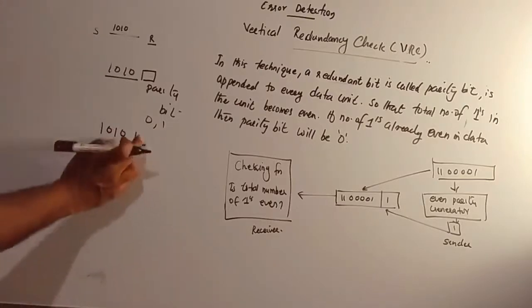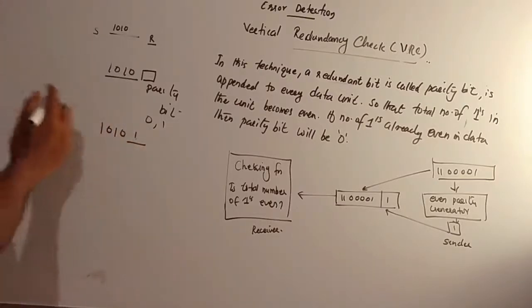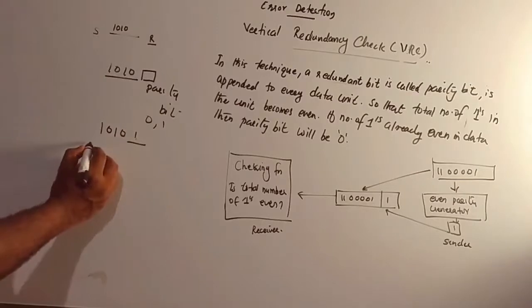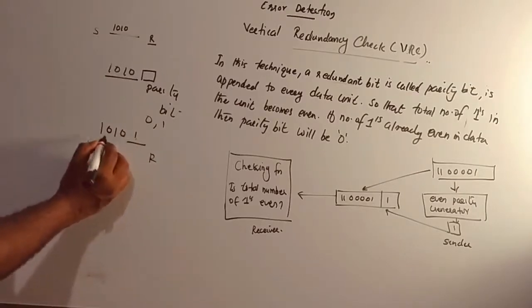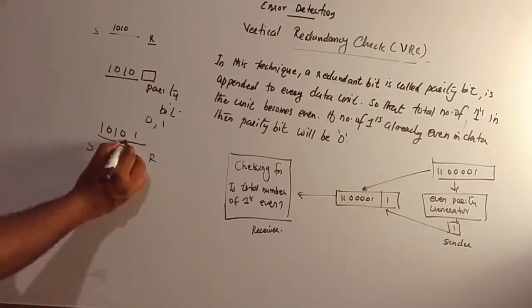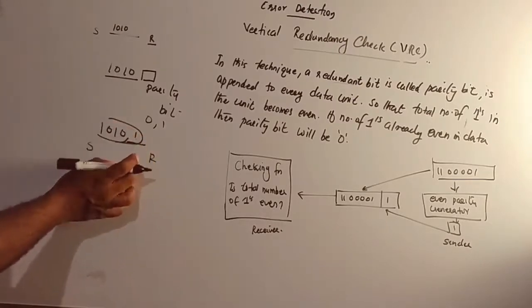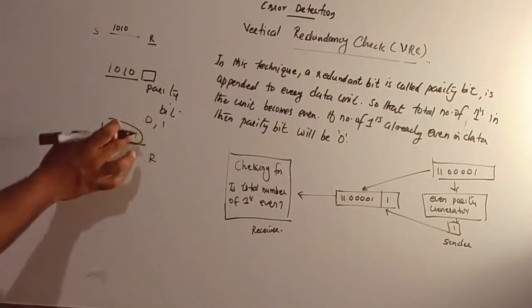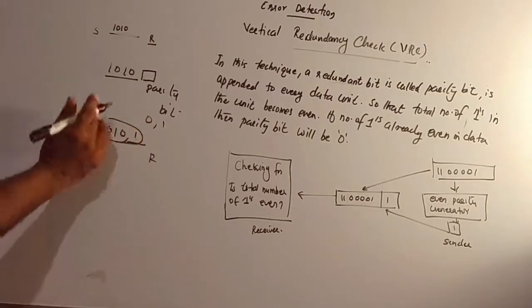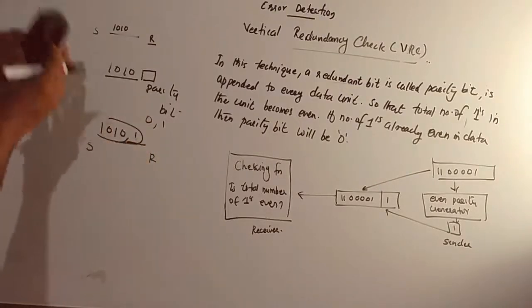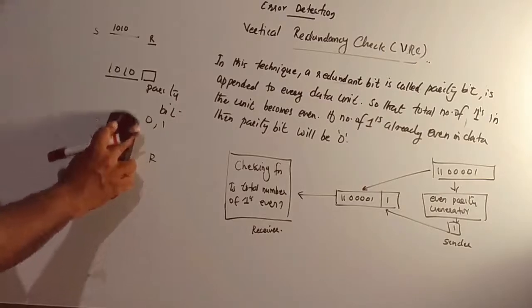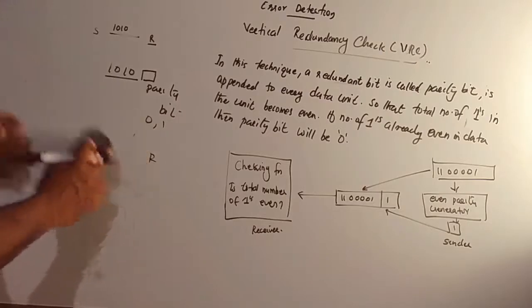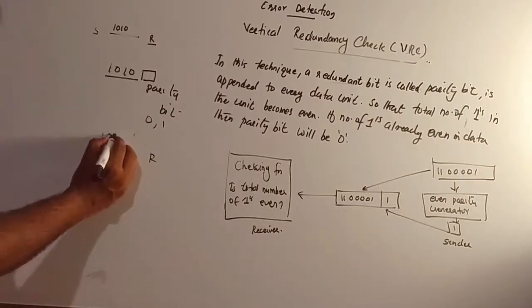Now we have to add a 0 or 1 to the original data. For example, if we send the data 1010, then we add 1010 and a parity bit of 1.